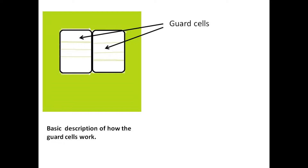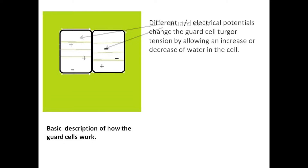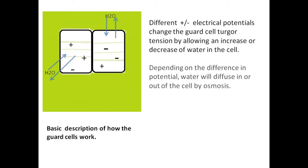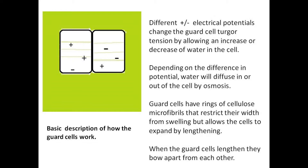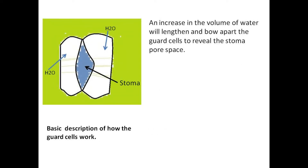Here's a basic description of how the guard cells work. Different positive and negative electrical potentials change the guard cell turgor tension by allowing an increase or decrease of water in the cell. Depending on the difference in potential, water will diffuse in or out of the cell by osmosis. Guard cells have rings of cellulose microfibrils that restrict the cell width from swelling but allow the cells to expand by lengthening. When the guard cells lengthen, they bow apart from each other, and an increase in the volume of water will lengthen and bow apart the guard cells to reveal the stoma pore space.